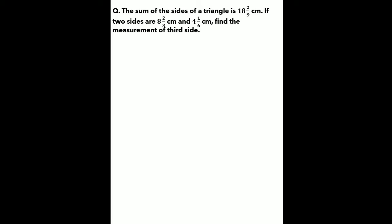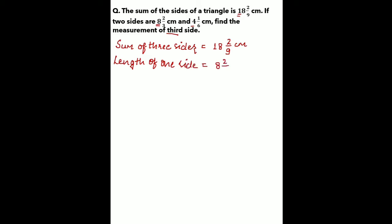In the next question, the sum of 3 sides of a triangle is given to us and the length of 2 of the sides are also given to us. We have to find the length of the third side. We will first find the sum of the given 2 sides, and then subtract this from the sum of 3 sides. The sum of 3 sides is 18 whole 2 upon 9 centimeter. The length of one side is 8 whole 2 upon 3 centimeter.